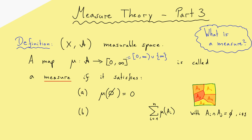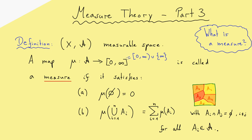This sum should equal the volume of the union of all these sets, from i equals 1 to n of Ai. This should hold for all Ai from our sigma algebra. This property is what one calls additive — it tells you that for a finite union, you can split it into the finite sum of volumes.